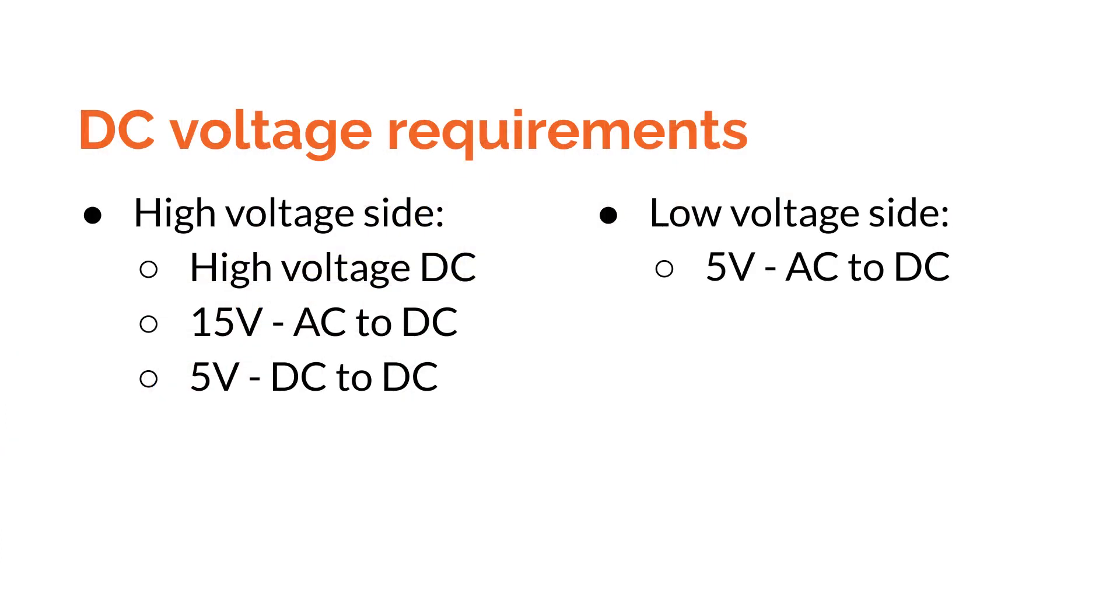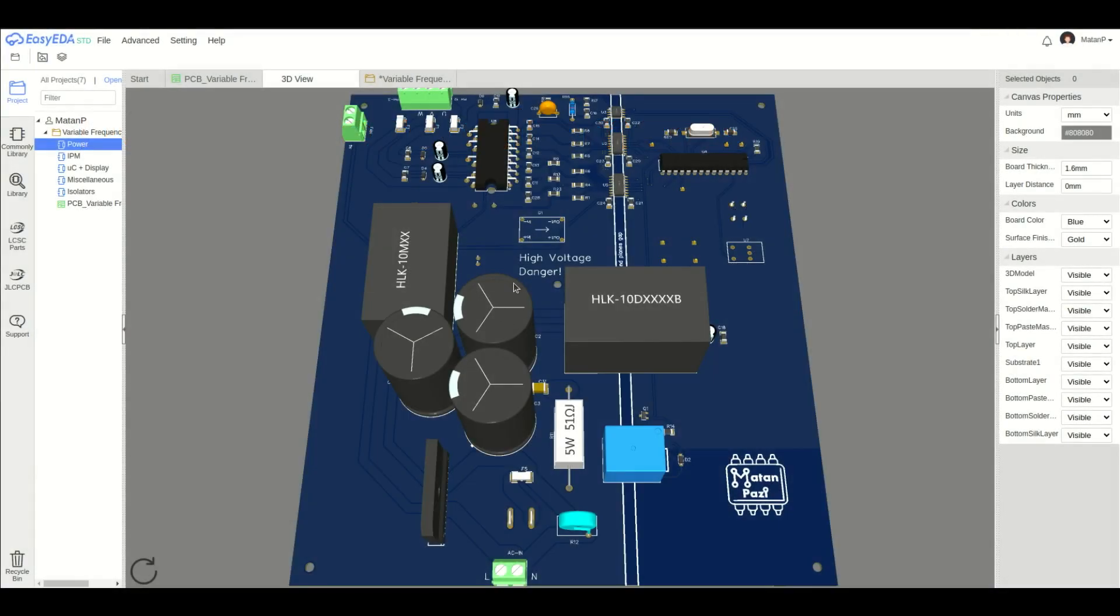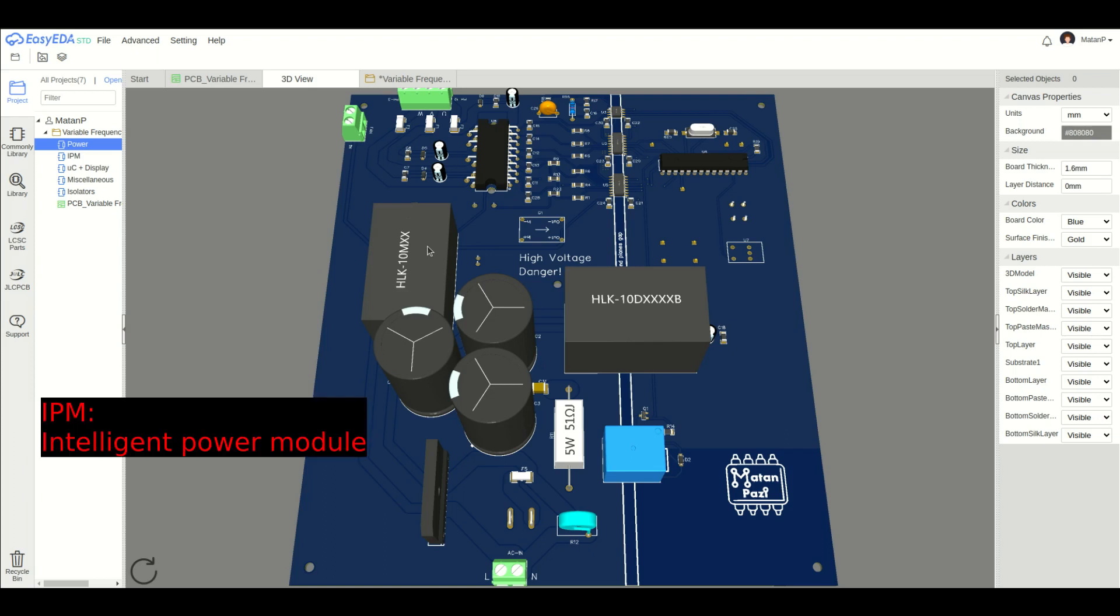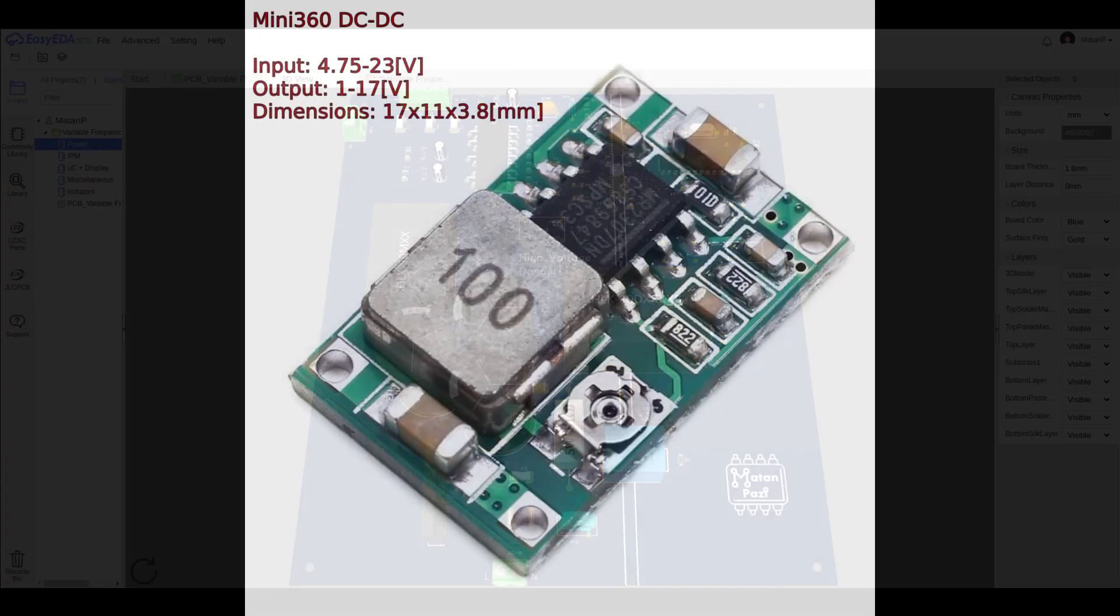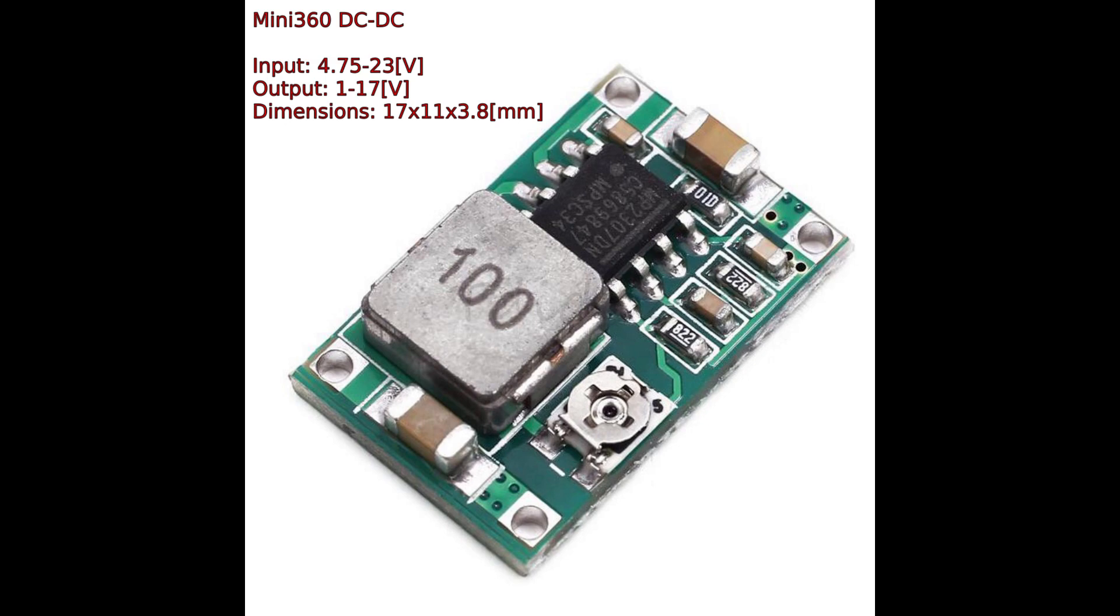In addition to converting the input AC voltage to high voltage DC for the inverter, I also need lower DC voltages to power my components. So, I have an isolated power supply which outputs 5 volts to the low voltage side, and I decided to use the same type of component in my high voltage side for 15 volts, since I need that voltage for my IPM, even though it doesn't need to be isolated. I also needed 5 volts in my high voltage side to power the isolators, so I used this DC to DC voltage regulator to step the 15 volts down to 5 volts.